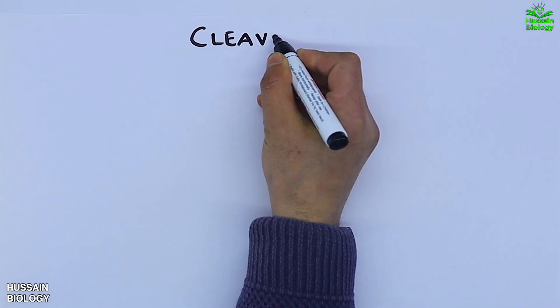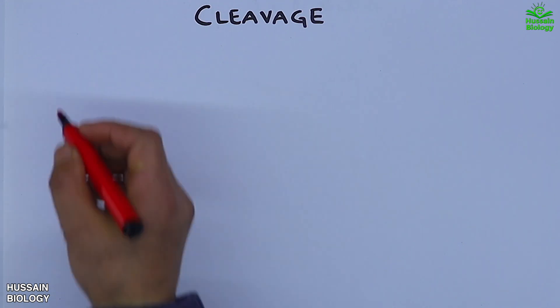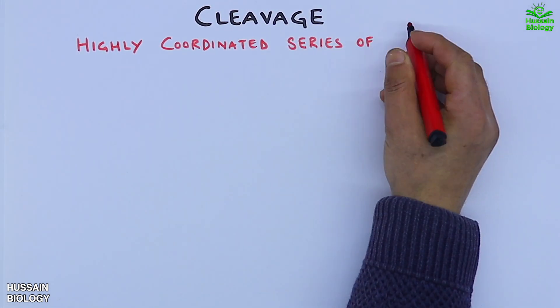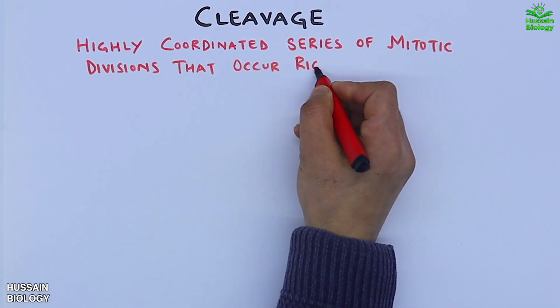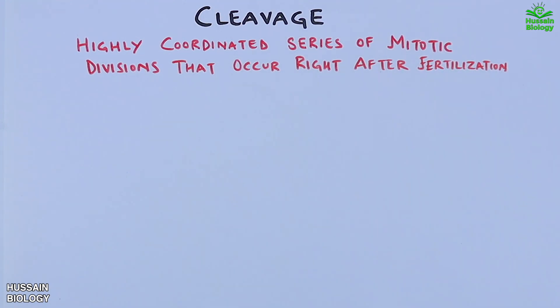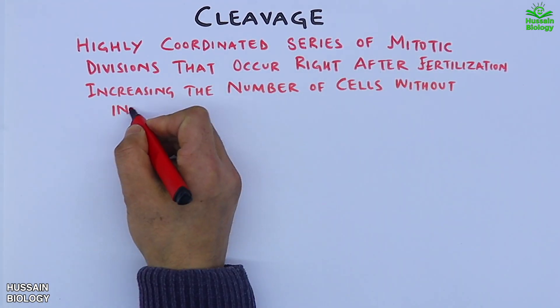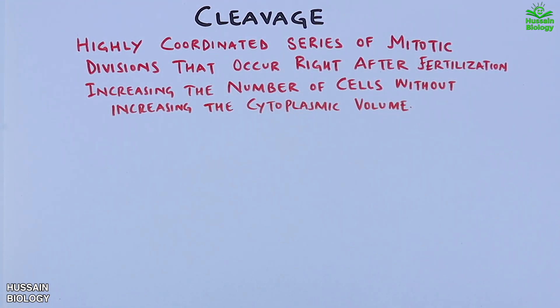In this video, we will be discussing about cleavage in humans. It is a highly coordinated series of mitotic divisions that occur right after fertilization, increasing the number of cells without increasing the cytoplasmic volume.